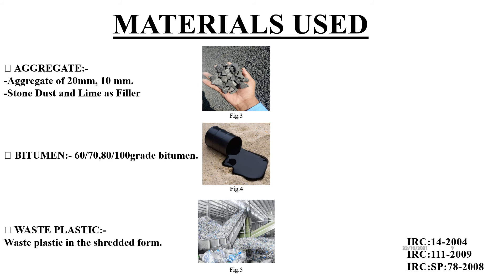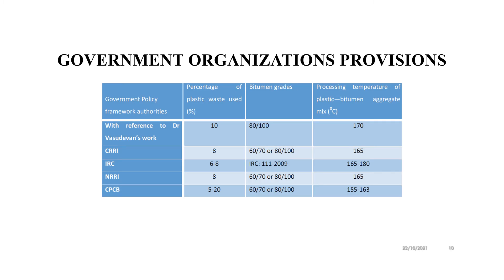The materials used are aggregates of size 20 mm and 10 mm, stone dust and lime as filler, and bitumen of 60/70 grade and 80/100 grade as per the specifications of IRC, CPCB, and CRRI. The plastic waste is used in shredded form. Regarding government norms for plastic road construction, Vasudevan used 10% of waste plastic relative to bitumen quantity, CRRI used 8%, IRC has specified 6 to 8%, whereas CPCB has specified 5 to 20%.